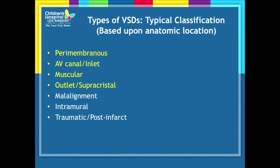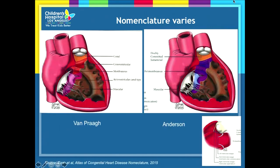When we think about typical classification, the top four — AV canal/inlet, muscular, and outlet/supercrystal — are the ones people think about most. There are also so-called malalignment VSDs and intramural VSDs, which I talked about last year at this conference and will not cover this time. Traumatic and post-infarct VSDs are other types, but we're really going to focus on those top four.